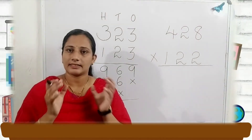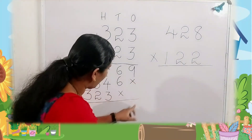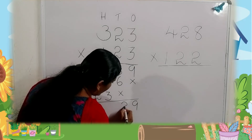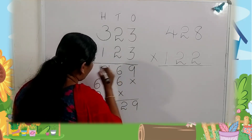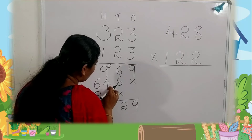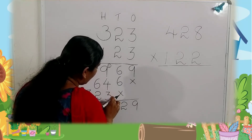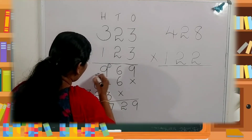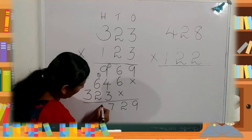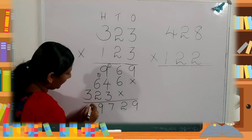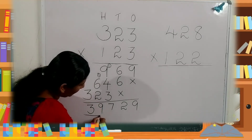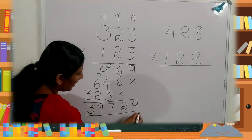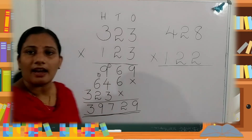Next, add these numbers. First, here nine — so nine. Here six. Six plus six is twelve, carry over. Nine plus four is thirteen, thirteen plus three is sixteen, sixteen plus one is seventeen, carry over. Six plus two is eight, eight plus one is nine. Then here three, and right here three. What is the answer? 39,729 is the answer.